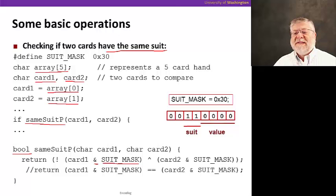You'll notice that when we do a bitwise and with this mask, we will only have nonzero results for these two bits. All the other bits will necessarily be zero because we have a zero here, and zero anded with anything will result in a zero. So this will essentially extract the value of the suit from the card representation.